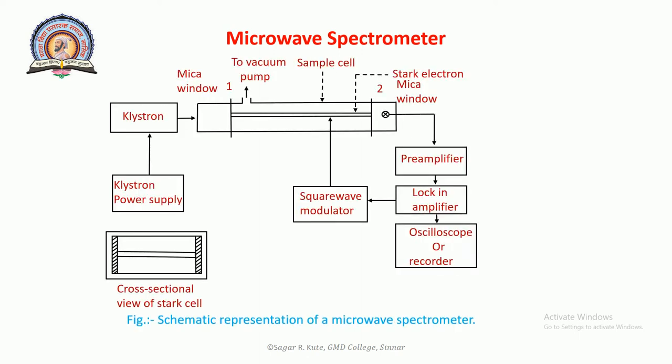This is the diagram showing a systematic representation of the Microwave Spectrometer. Different spectroscopic designs use various types of microwave components. However, based on function, a spectrometer has the following parts: first, the source; second, measurement of frequency; third, guidance of radiation to the absorbing substance; fourth, the sample cell; and fifth, the detector. A systematic representation of the Microwave Spectrometer is shown in the figure.